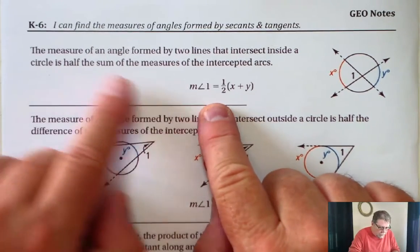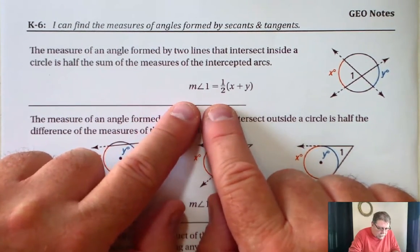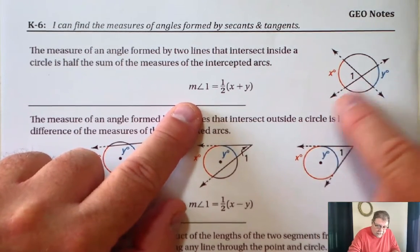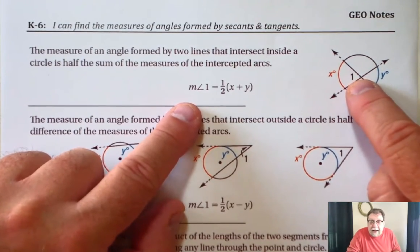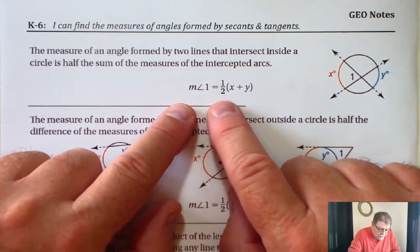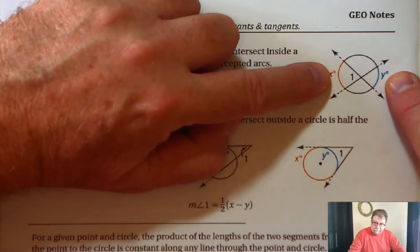The first one says, the measure of an angle formed by two lines that intersect inside a circle, so two lines intersect inside a circle and it doesn't intersect at the center, is half the sum of the measures of the two arcs.